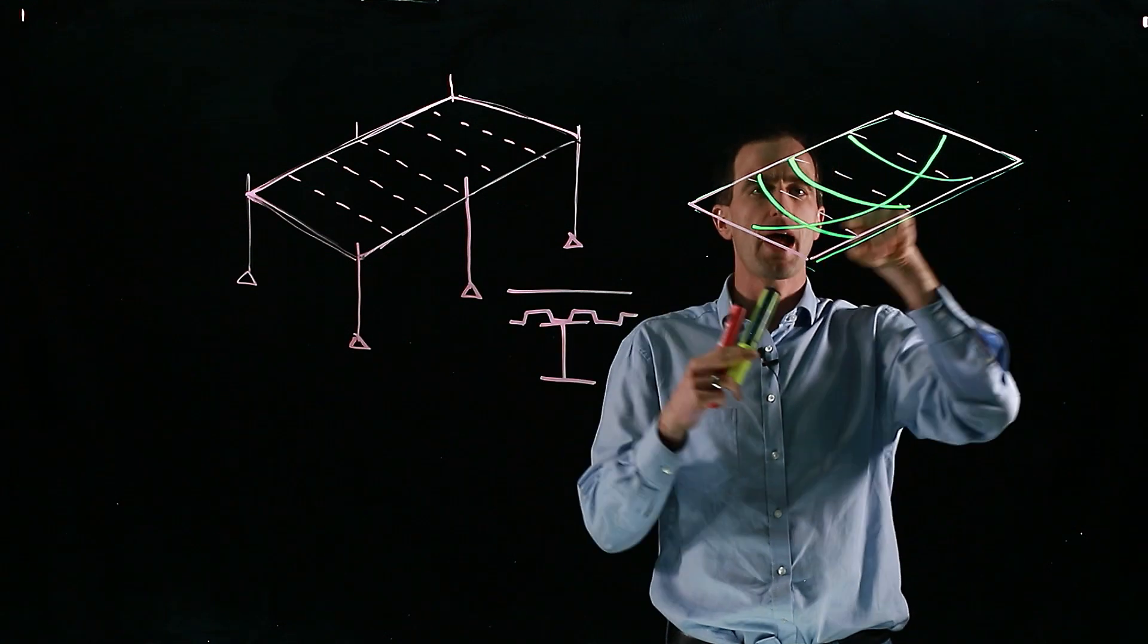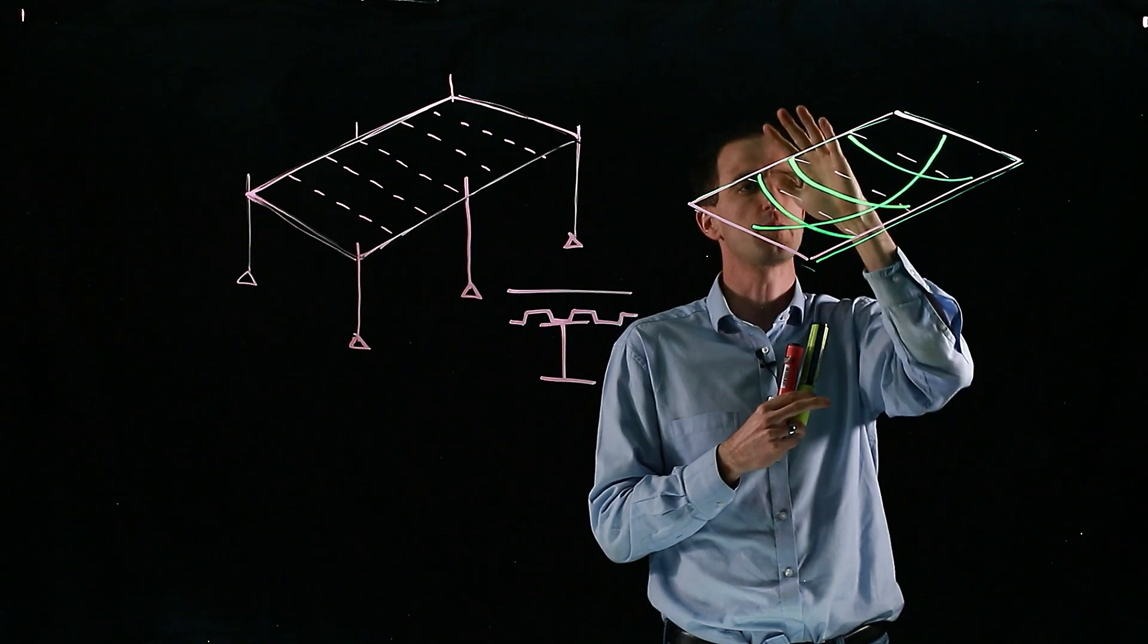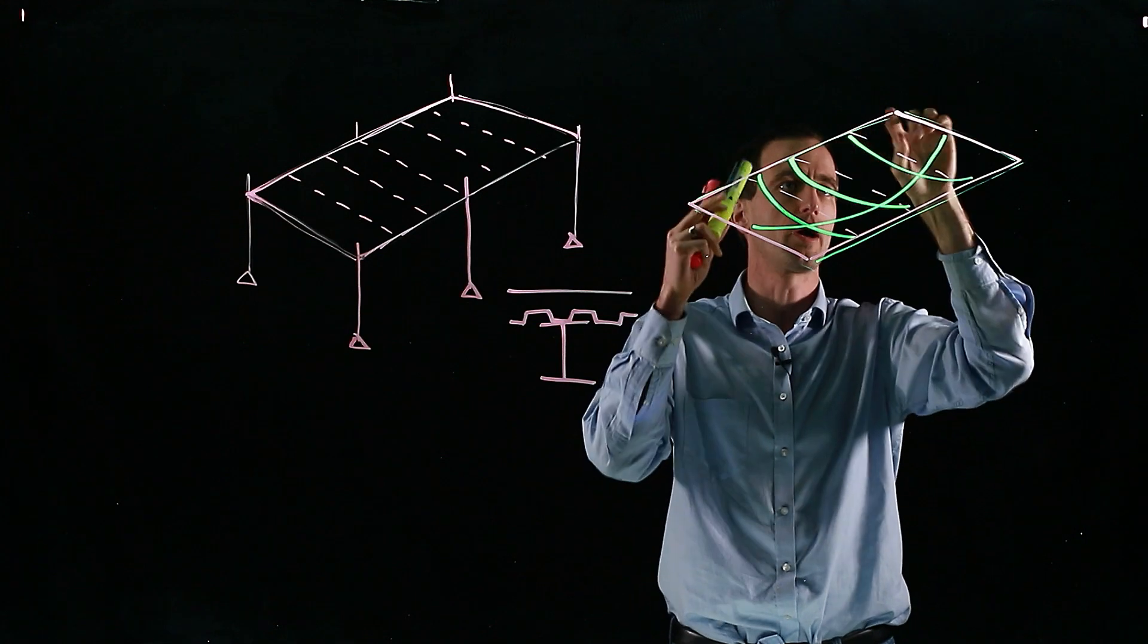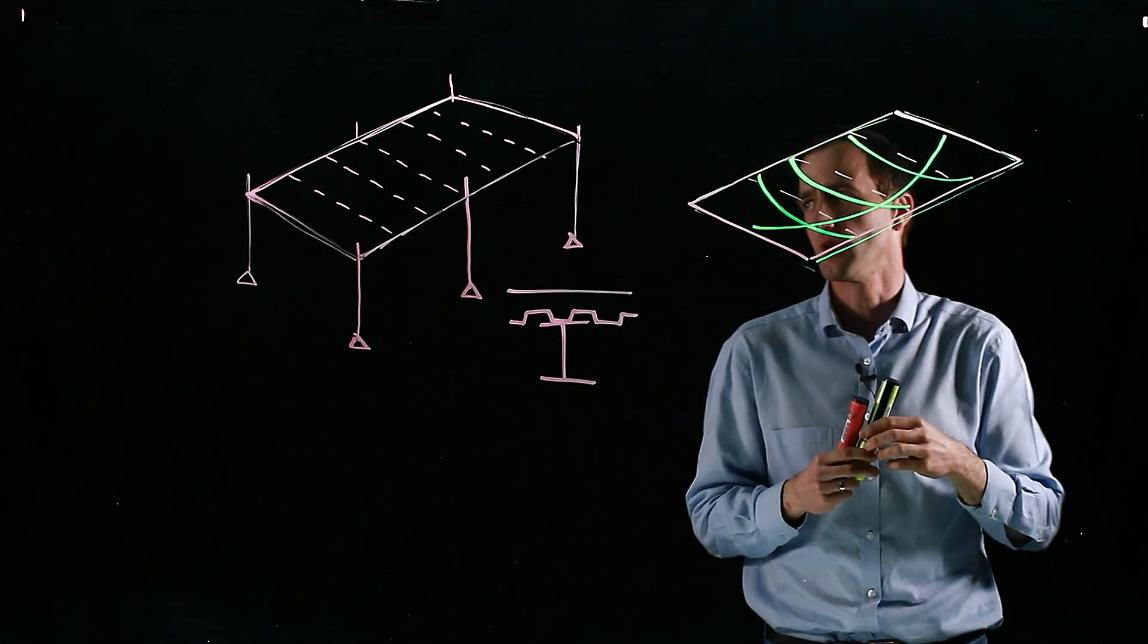They just hang, and in their hanging state the rebar now starts picking up the load along with the residual capacity of our secondary beams, carrying it to our primaries and from the primaries back to our structure.